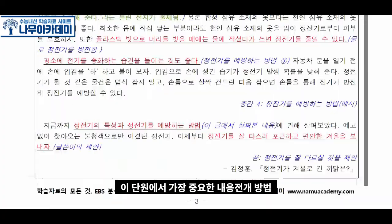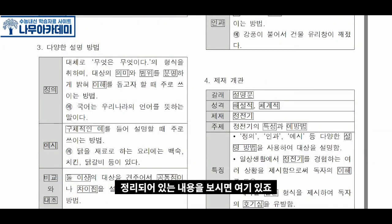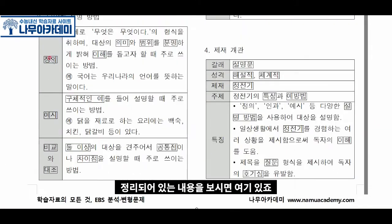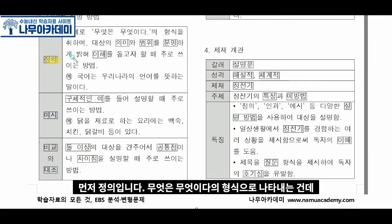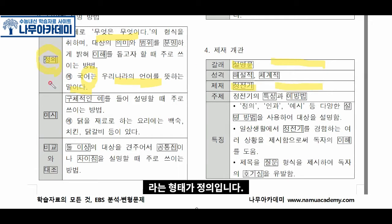가장 중요한 내용 전개 방법, 정리되어 있는 내용을 보시면 여기 있죠? 먼저 정의입니다. 무엇은 무엇이다의 형식으로 나타내는 건데, 예를 들어 '국어는 무엇이다', '설명문은 무엇이다', '정정기란 무엇이다'라는 형태가 정의입니다.